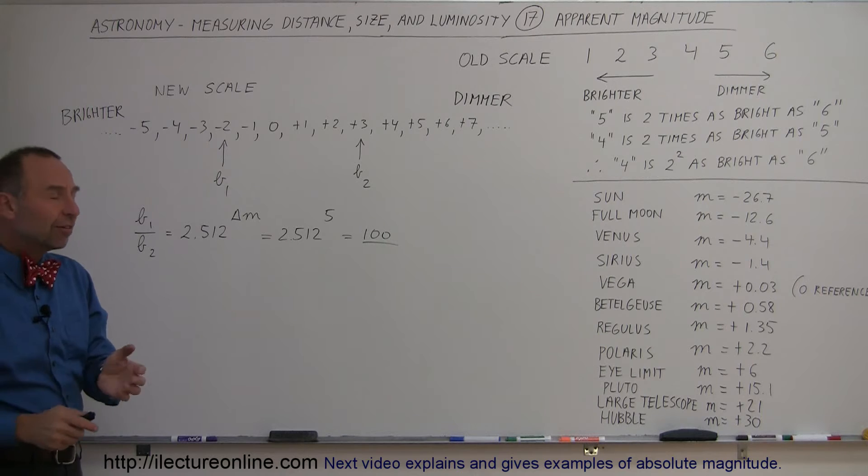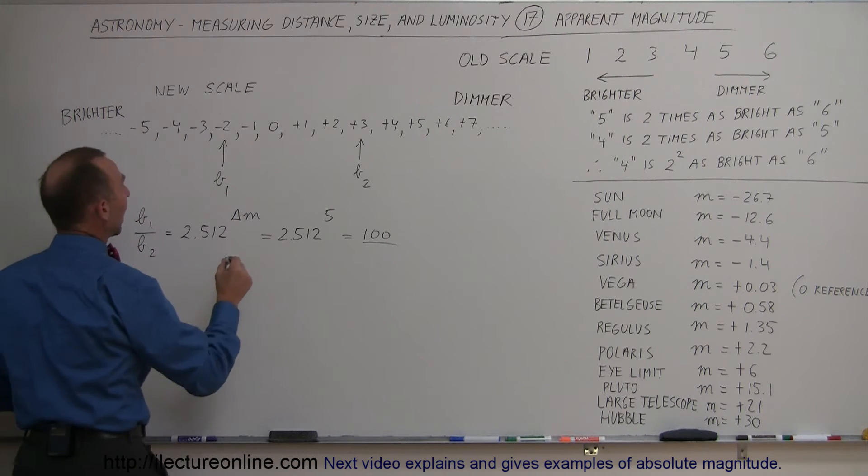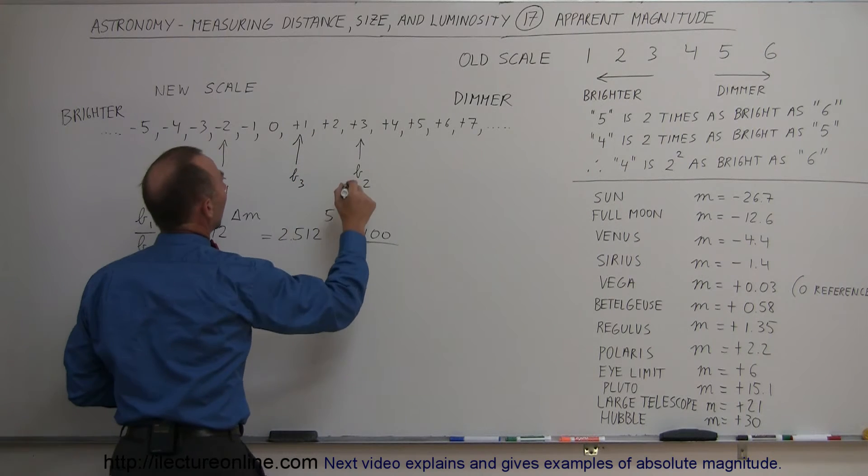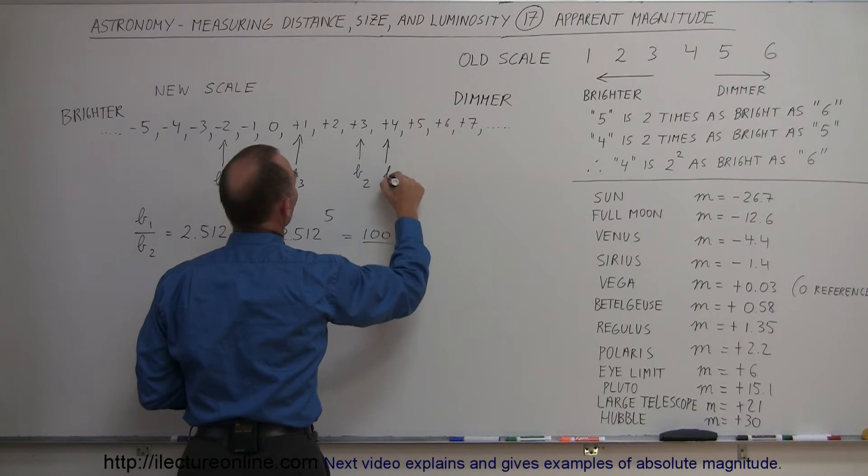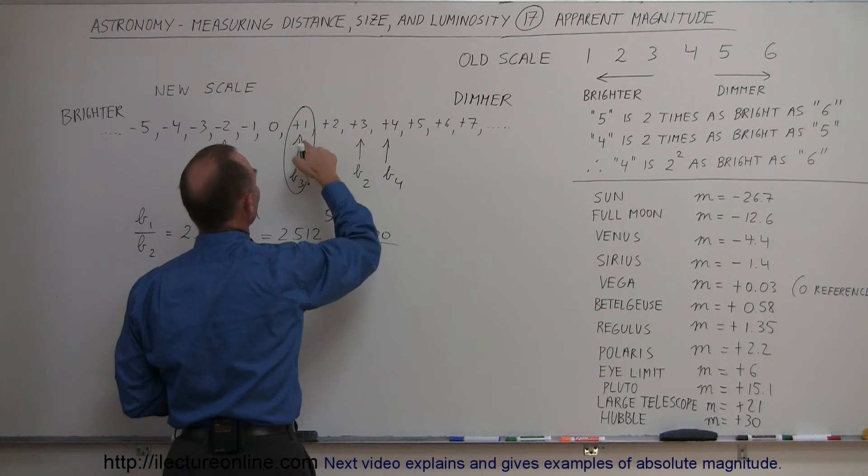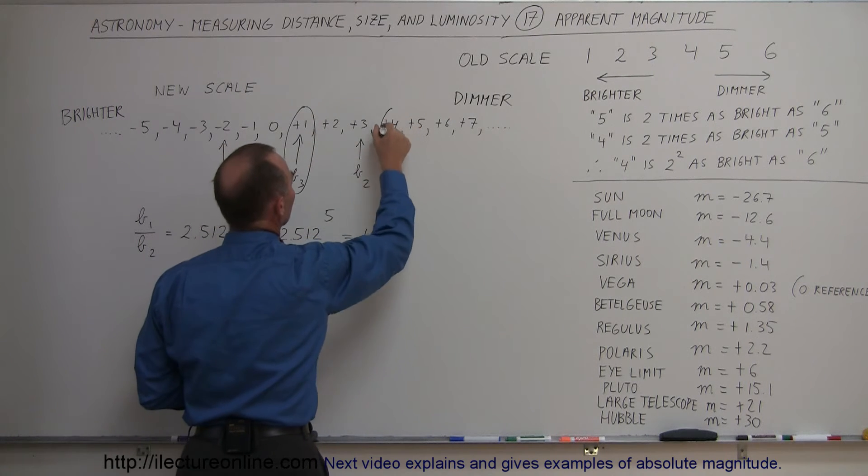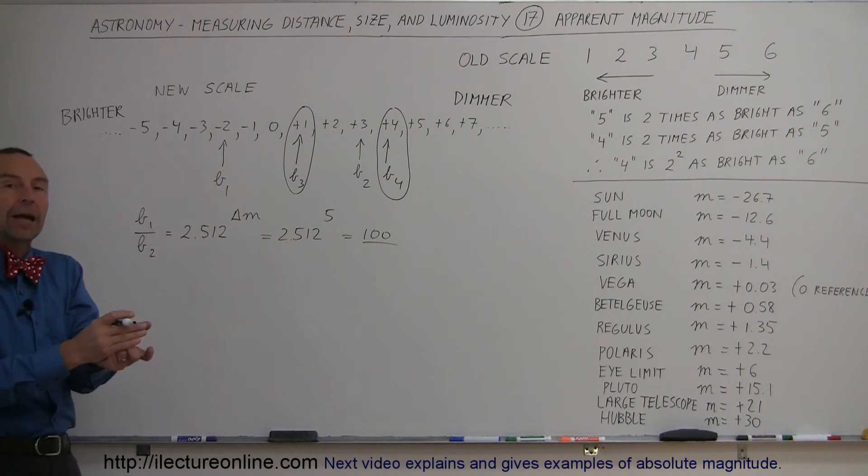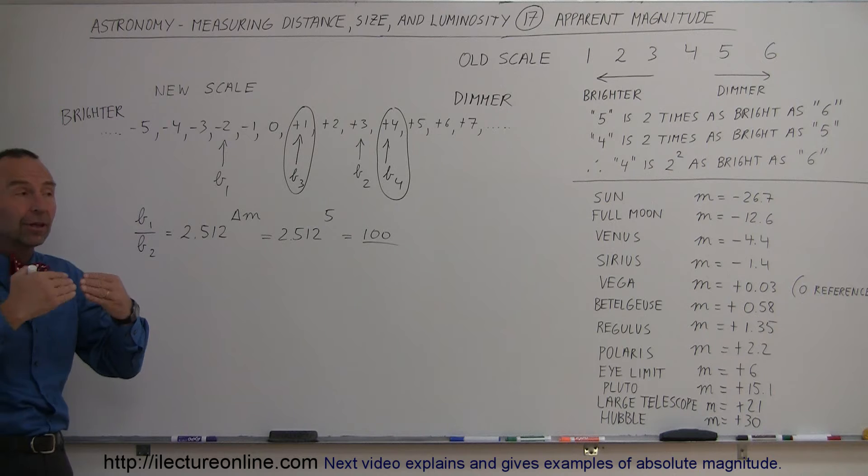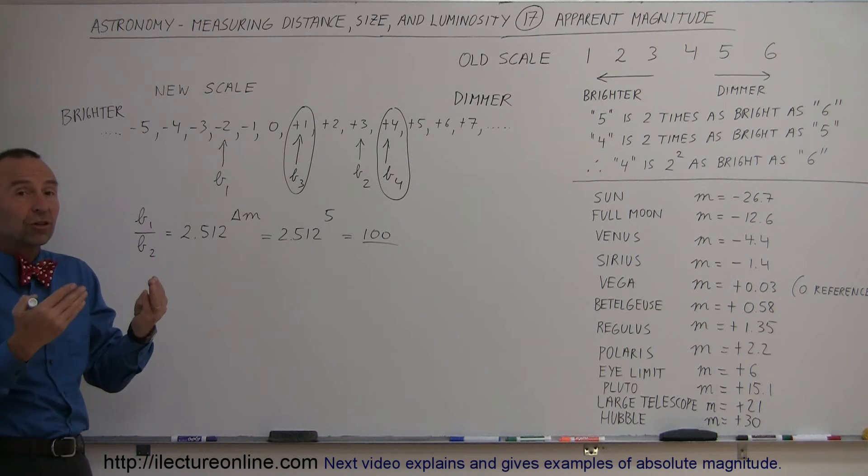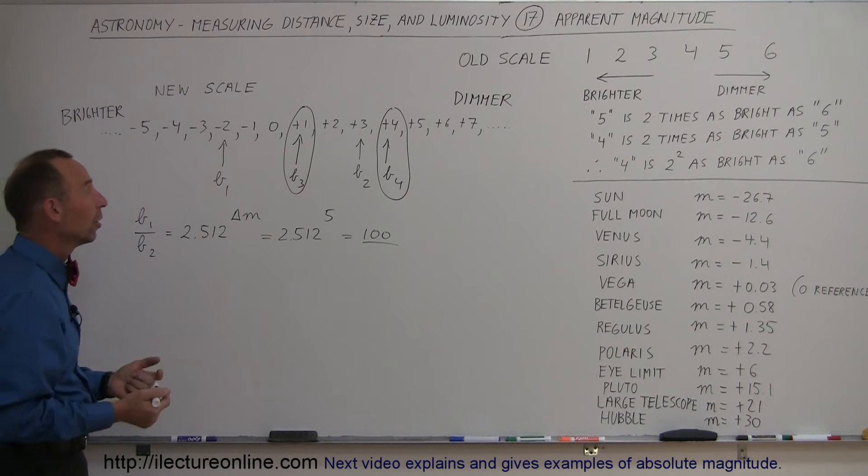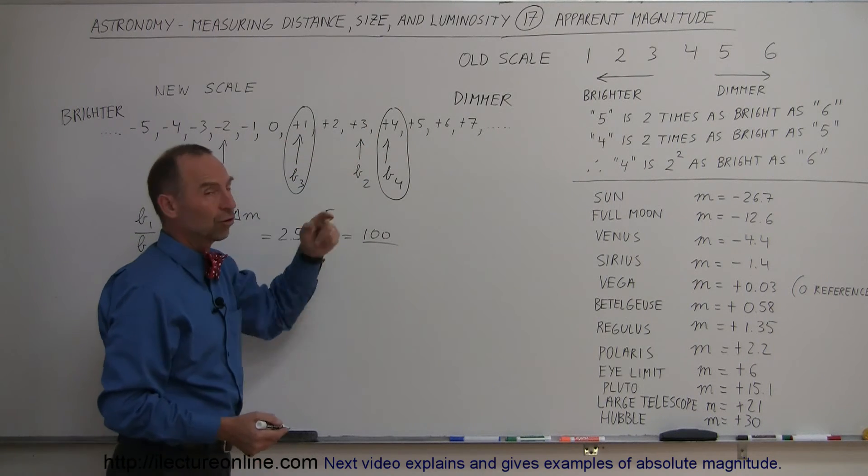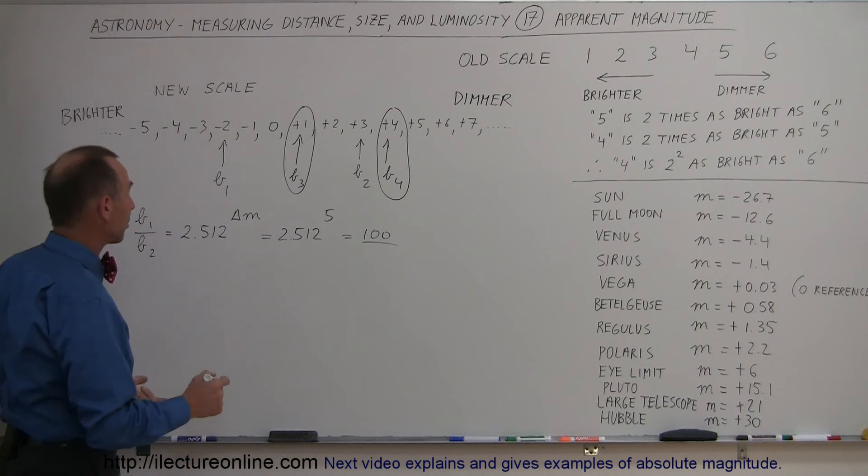What if the difference is not five? Well, you can use your calculator. Let's say that we have star three with a magnitude plus one, and star four with a magnitude plus four. Remember, these are apparent magnitudes. That's the way they appear to us from the Earth. That's not necessarily the way they actually are, but that's the way they appear to us. You realize that since star three has a smaller magnitude than star four, star three is brighter. The question is how much brighter?